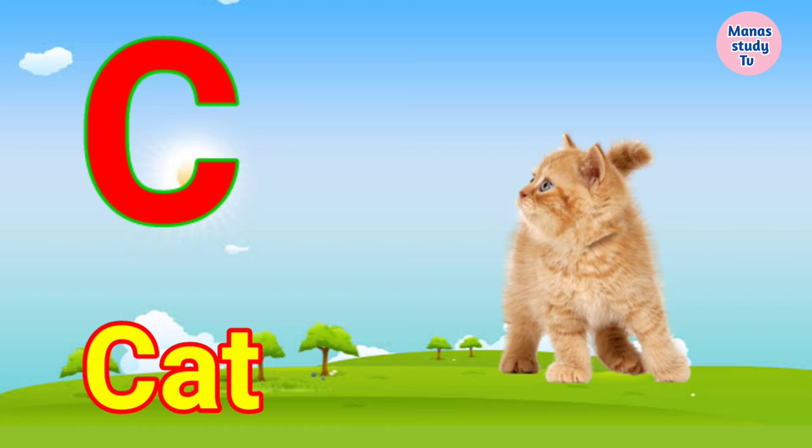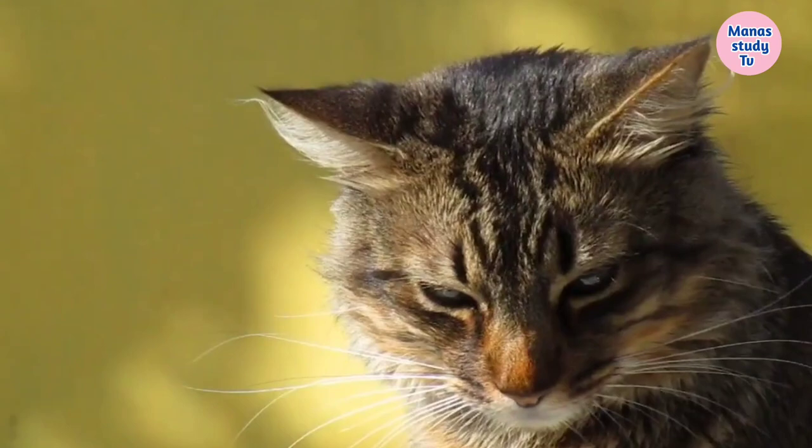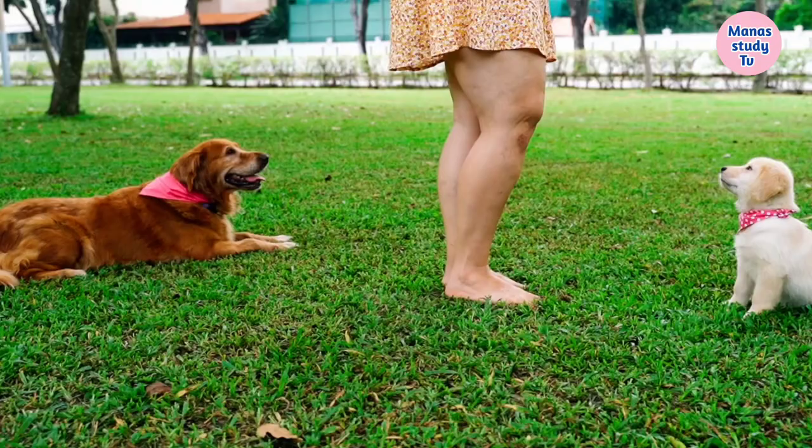C. C for Cat. Cat means Billi. D. D for Dog. Dog means Kutta.